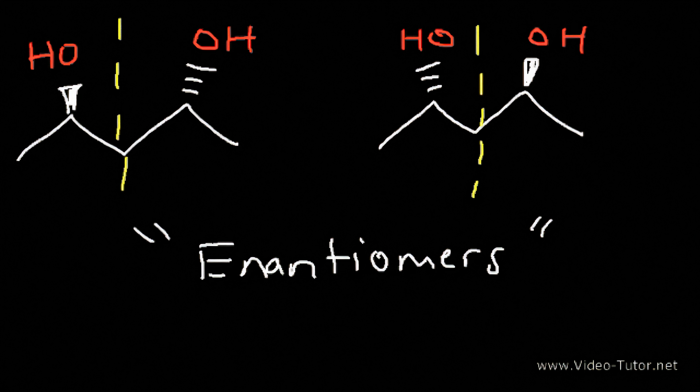If some chiral centers change but not all, then you have diastereomers. And if they're connected differently, then you have a case of constitutional isomers.